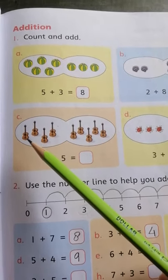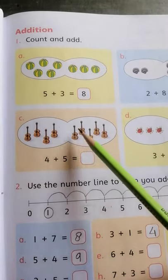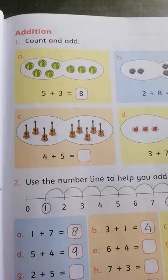Now count the whole. These are 1, 2, 3, 4, 5, 6, 7, 8, 9. Total 9 guitars are here.